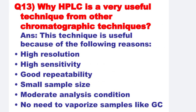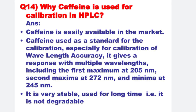Next: Why is HPLC a very useful technique compared to other chromatographic techniques? This technique is useful because of the following reasons: Number 1, high resolution. Number 2, high sensitivity. Number 3, good repeatability. Number 4, small sample size. Number 5, moderate analysis condition. Number 6, no need to vaporize the sample like GC.